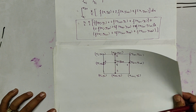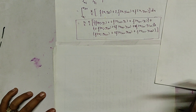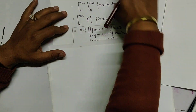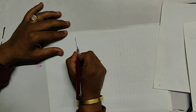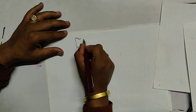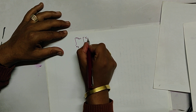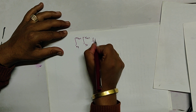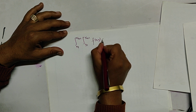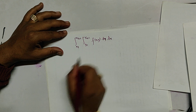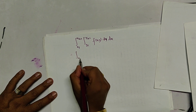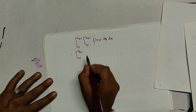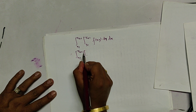Now let us derive the double integration formula for Simpson's 1/3 rule. We consider the integral from x_i to x_{i+2}, y_i to y_{i+2} of f(x, y) dy dx. Expanding the inner integration first using Simpson's 1/3 rule gives h/3 times [...].